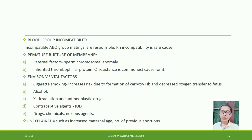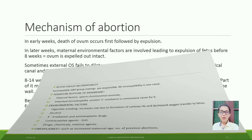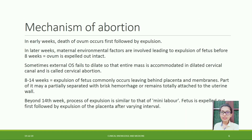Paternal factors include chromosomal anomaly and inherited thrombophilia such as protein C resistance. Environmental factors include cigarette smoking, which increases risk through formation of carboxyhemoglobin and decreased oxygen transfer to the fetus, alcohol, X-irradiation, antineoplastic drugs, contraceptive agents, iodides, and other noxious chemicals.